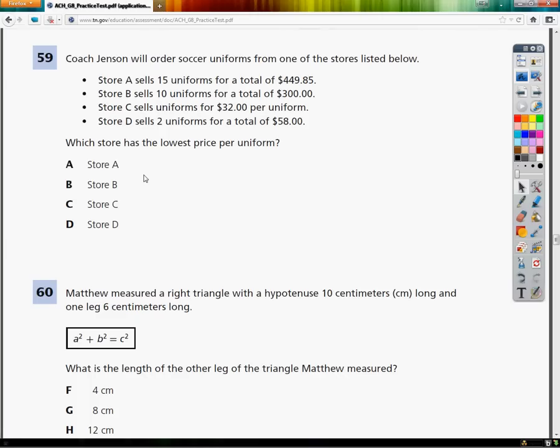They didn't even try to name themselves interesting things, it's just Store B. Where'd you get your uniform? Store B. Anyway, we want to know which store has the lowest price per uniform because he's a coach and he has to save money because schools are cheap.